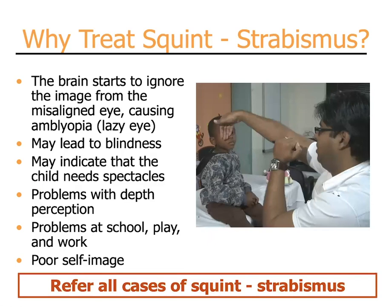So why treat squint or strabismus? Is it just cosmetic? No, in fact it's not. When the eyes are not properly aligned, the brain does not want to see double vision and it will start to suppress or not use one eye. This leads to amblyopia, what some people term lazy eye. Essentially what happens with amblyopia is that the brain stops using the eye. If this is not caught in a timely fashion, it leads to permanent blindness or decreased vision, and at a certain point the brain is no longer capable of learning to see with that eye.